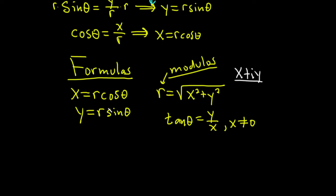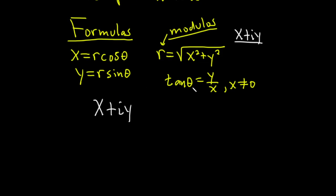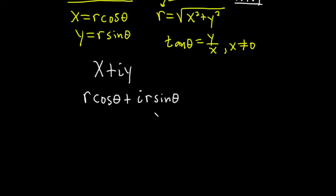So what you can do now is we have x plus iy. And so what is the trig form? Basically you replace it with these formulas. So x is r cosine theta plus i and then y is r sine theta. And then you can pull out the r. You can factor it out. So you'll get r parentheses cosine theta plus i sine theta. Pretty cool.